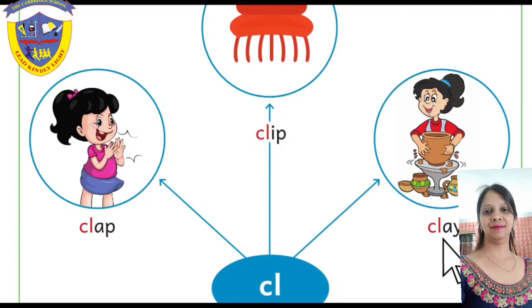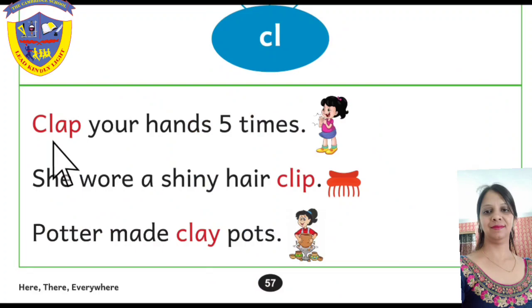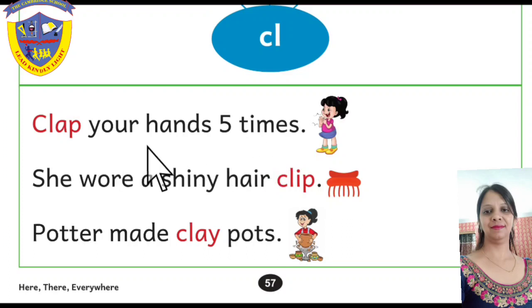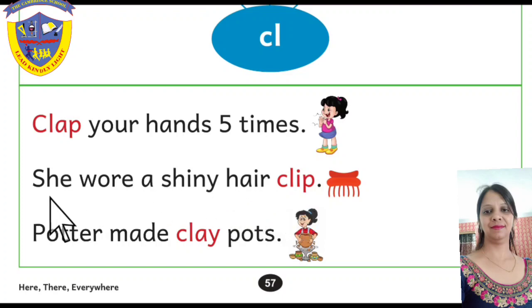Next is 'clay' — CL-A — clay. Clay means a type of soil. Now we will read sentences. 'Clap your hands five times.' Apne haathon se panch baar tali bajao. 'She wore a shiny hair clip.' She is used for a girl; 'wore' is the second form of 'wear.'